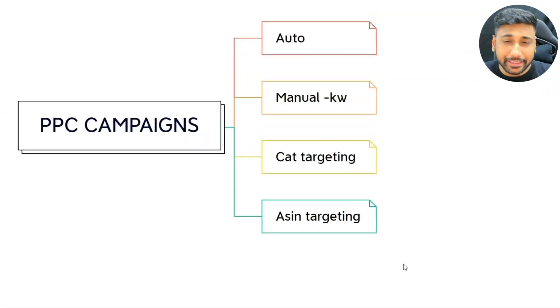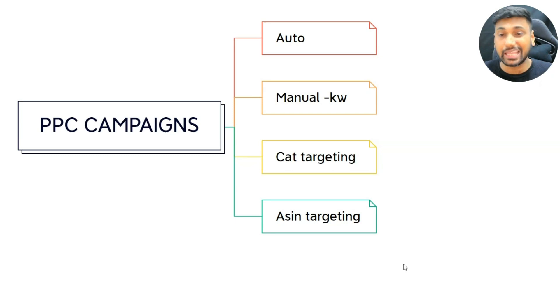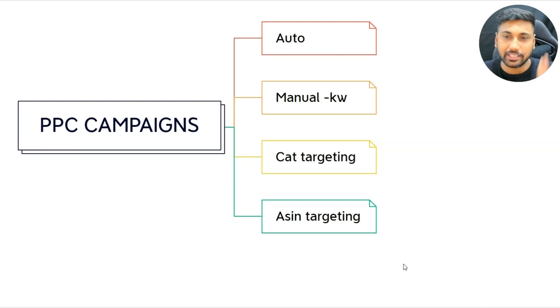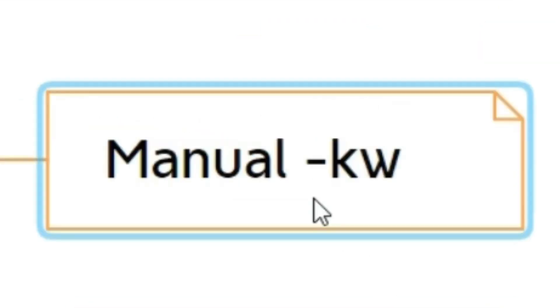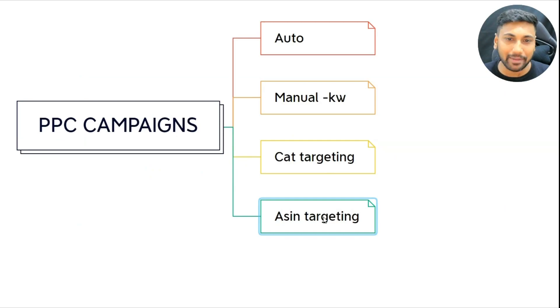Without further delay, let's get started. In this video, I'm going to help you start Amazon PPC campaigns for the first time. You'll learn exactly how to create four important campaigns in less than five minutes — auto campaign, manual campaign, category targeting campaign, and ASIN targeting campaign.